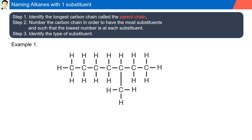Naming alkanes with one substituent. Step one is to identify the longest carbon chain, called the parent chain. Step two is to number the carbon chain in order to have the most substituents, such that the lowest number is at each substituent. And finally, step three is to identify the type of substituent.